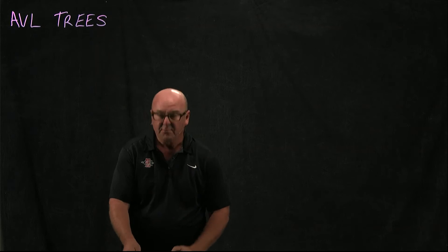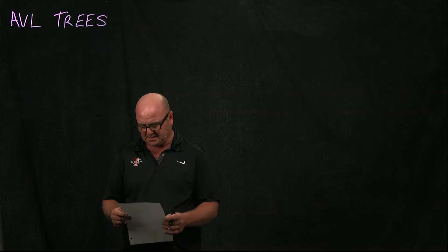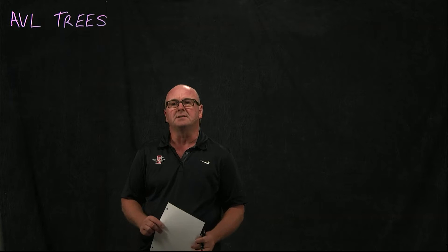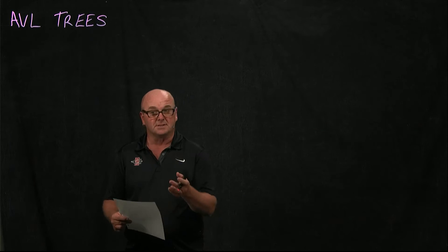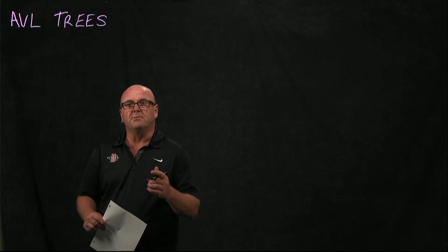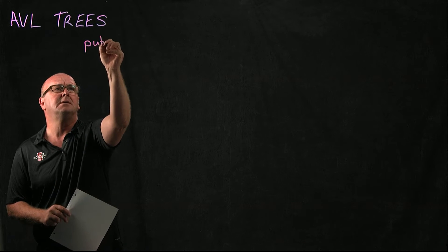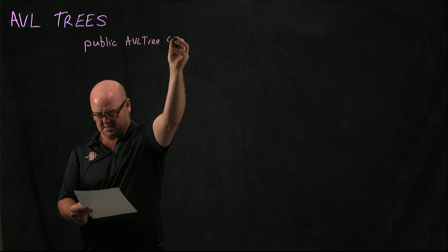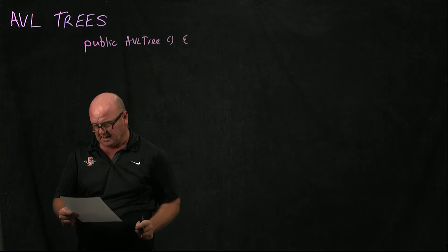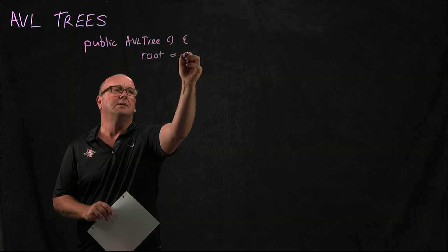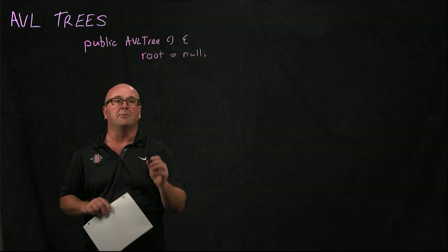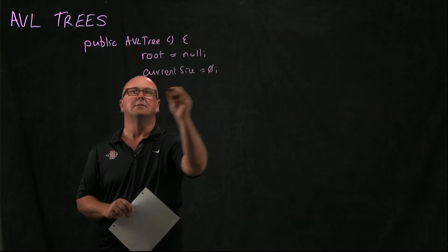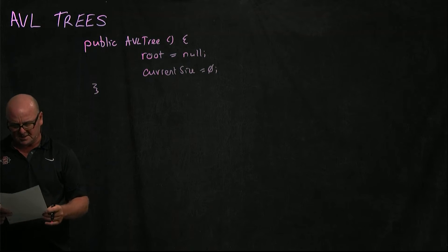In our AVL tree we have a node class that we've seen how to construct, and we have a root pointer and our current size so that we know how big the tree is in constant time. Our constructor for the AVL tree class is just going to set root equal to null and current size equal to zero.